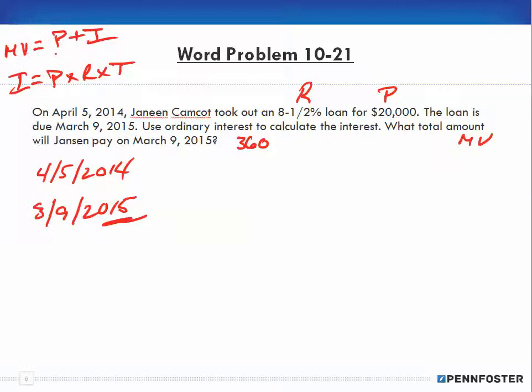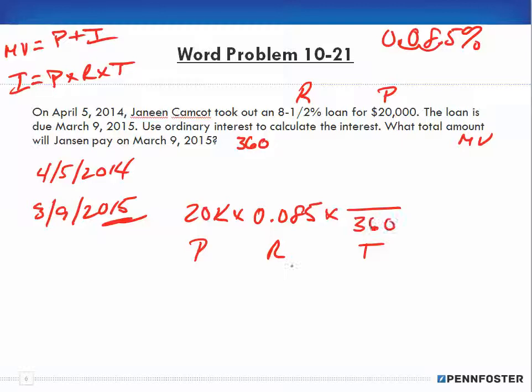First we need to get our interest to determine our maturity value. We have $20,000 times our rate of 8.5%. Remember 8.5%, that's a percent, and to convert it into a decimal we move the decimal over two places, so we end up with 0.085 as decimal form. Now we have to consider our time. We're going to use ordinary interest so we put 360 in the denominator, but now we have to figure out the number of days.